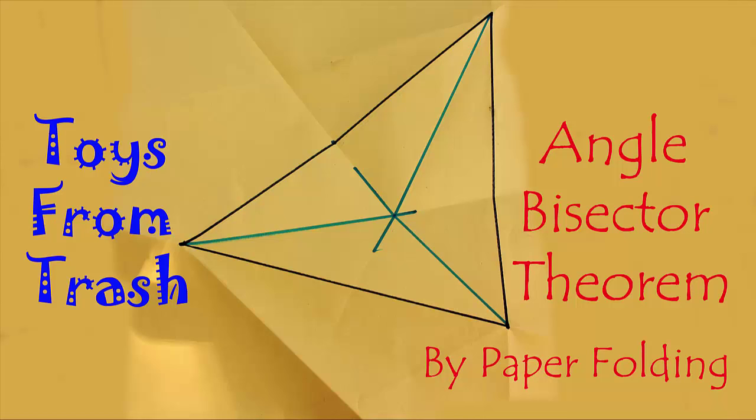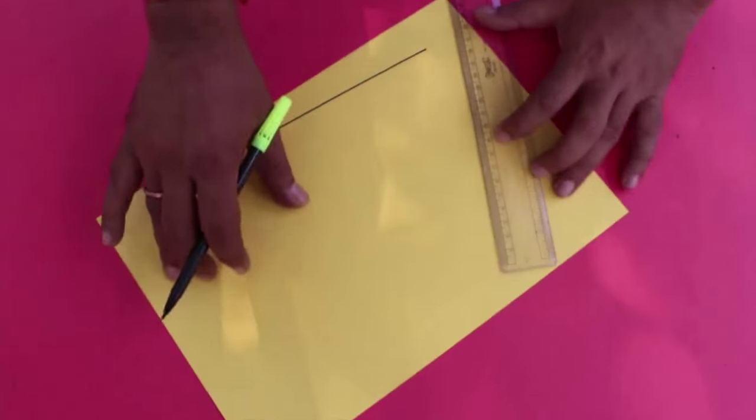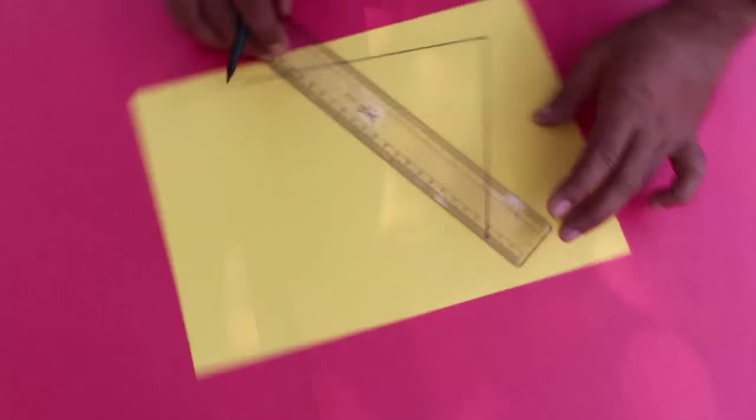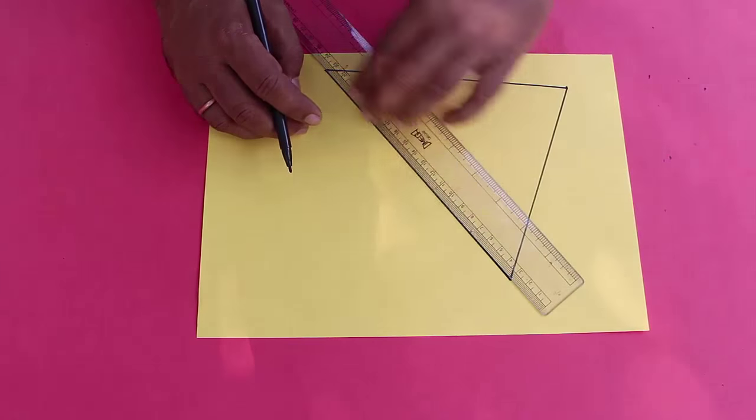First make any scalene triangle on a piece of paper. All its sides will be of different lengths and therefore all the three angles will be different from each other.